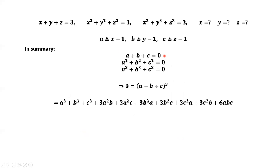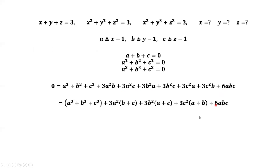In summary, we have three results. From the first result, we take the third power on both sides. This implies 0 equals (A plus B plus C) to the power of 3. We can use the binomial formula twice to expand this. Grouping the terms, we can see the first part: A to the power of 3 plus B to the power of 3 plus C to the power of 3 equals 0. From the first equation, b plus c equals negative a, a plus c equals negative b, and a plus b equals negative c.